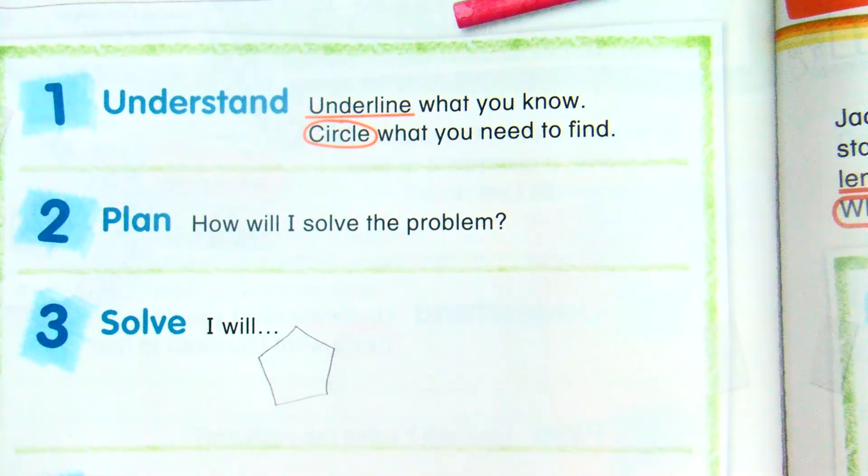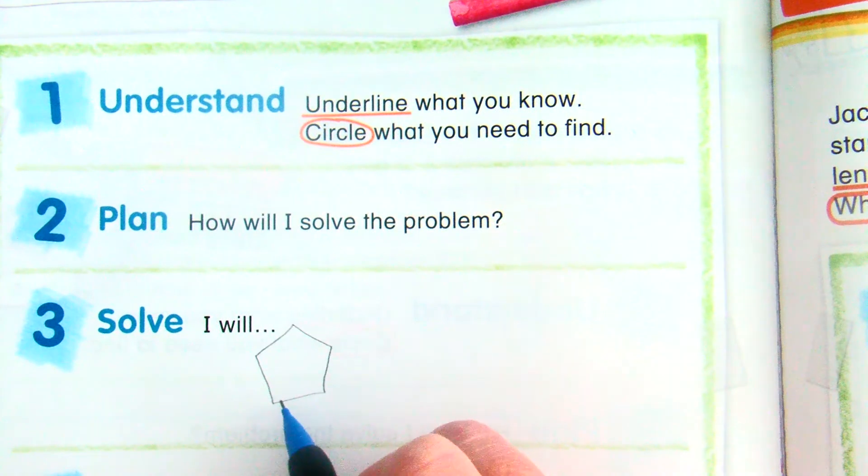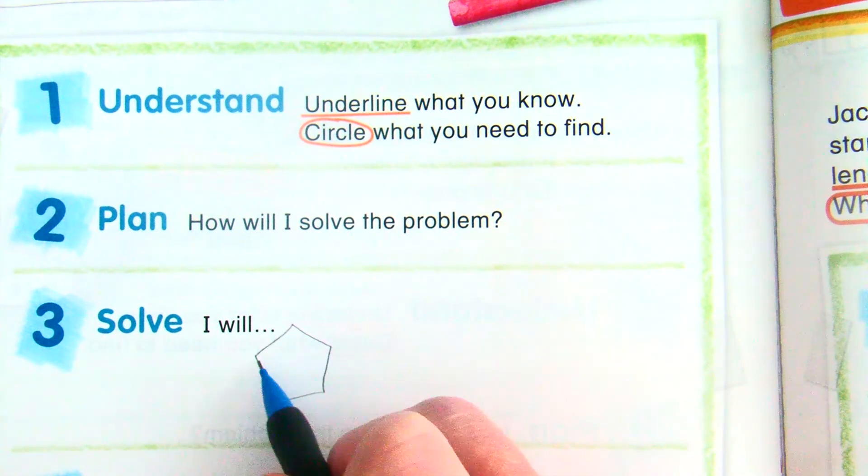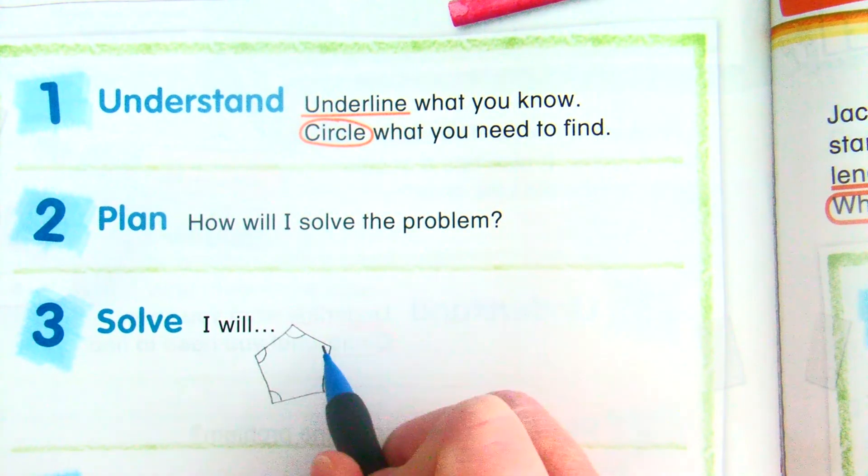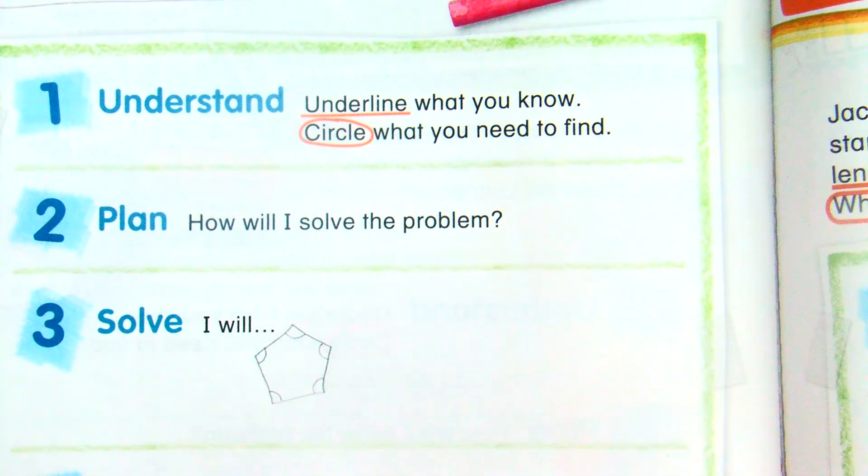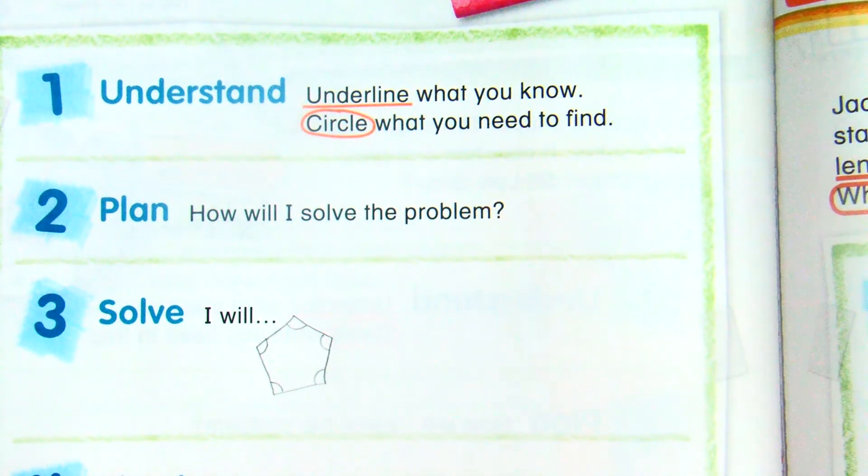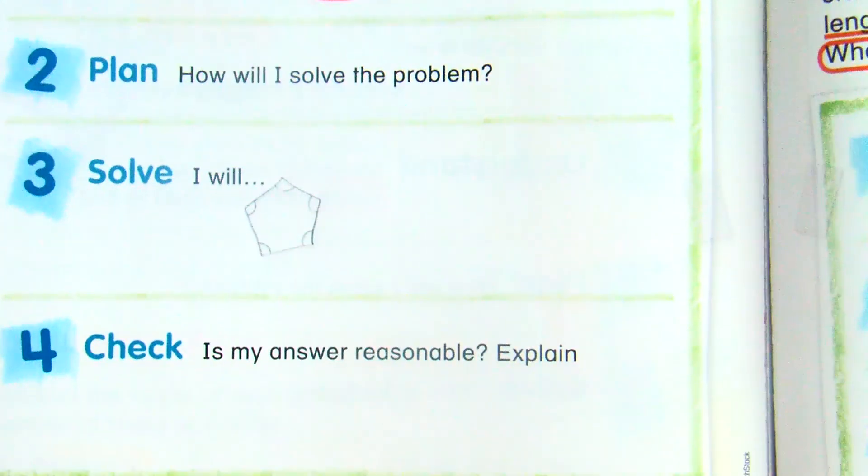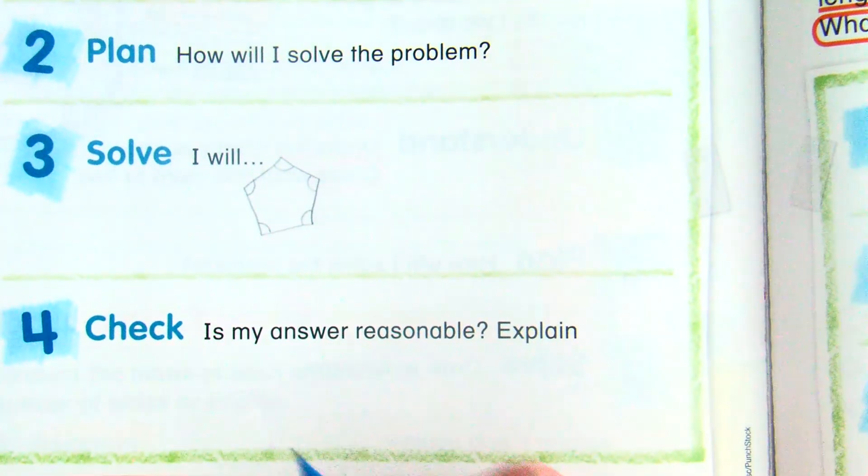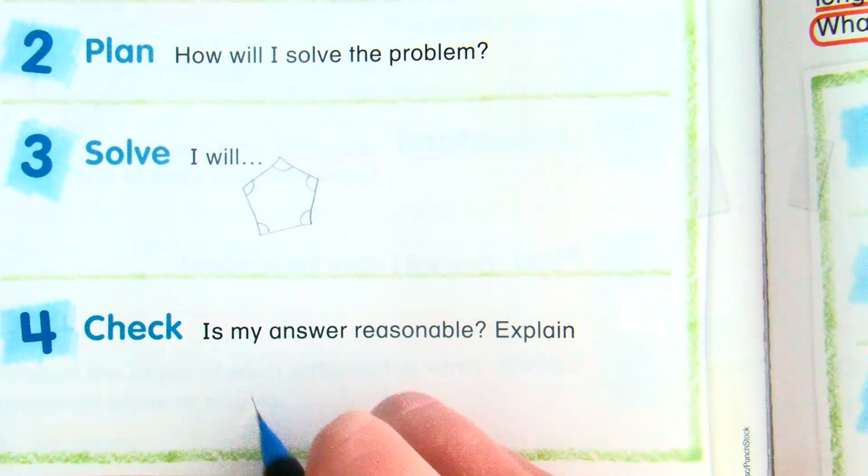So I ended up with five sides. I'm going to see if I have five angles. One, two, three, four, five. So I do have a figure that has five sides and five angles. That figure is called a pentagon.